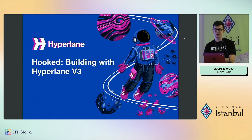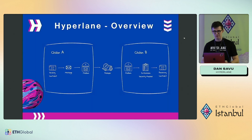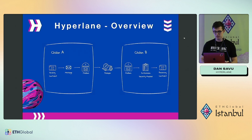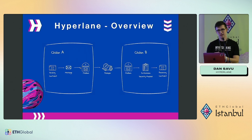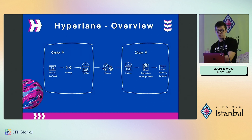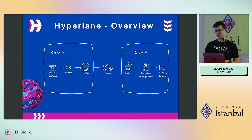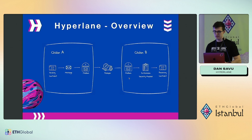To give you an overview of Hyperlane: you want to send a message between two contracts that live on different chains — chain A and chain B. From the sending contract you call the mailbox contract on the origin chain and send a message to it. There is an off-chain agent called a relayer that periodically scans the mailbox on the origin chain, and when it finds new messages it looks for their destination chain and delivers them to the mailbox on the destination chain.